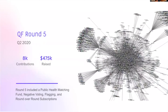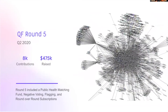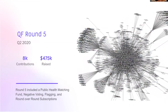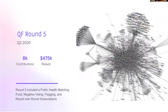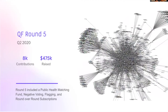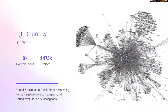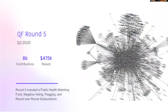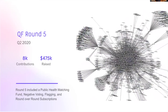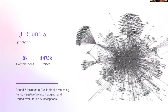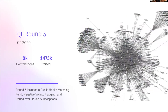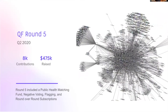Round five, in Q2 2020, we expanded into experimenting with a public health matching fund — herd immunity is a public good. If you remember Q2 2020, we were all trying to figure out the coronavirus pandemic. We expanded into a health matching round that was moderately successful, raising $500K all in for open source, media, and public health.